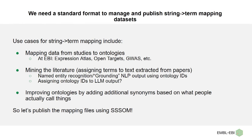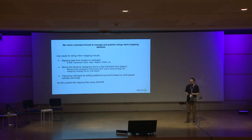We need a standard format to manage and publish these mapping datasets, and there are lots of use cases for this. It can be things like what we do — mapping data from studies to ontologies — but also mining the literature: assigning terms to text extracted from papers using NLP approaches and then grounding the results into ontologies. It could also apply to the output of large language models, which are very topical at the moment. These datasets can also be used to improve ontologies, because they tell you what people actually call things out in the wild, which is really useful data in itself.